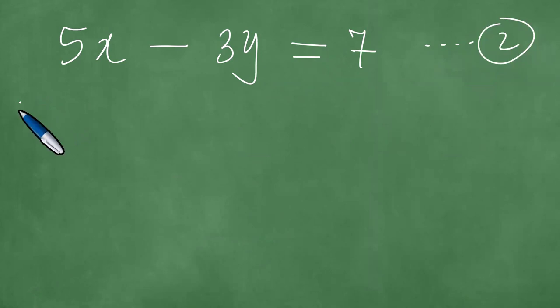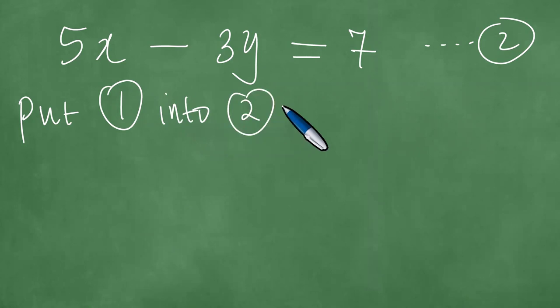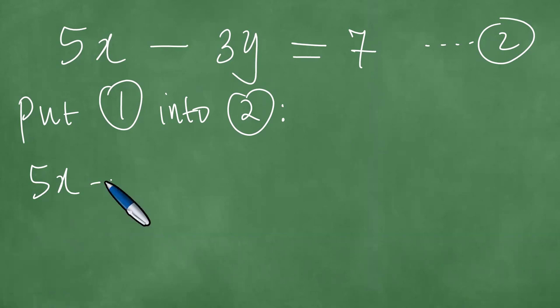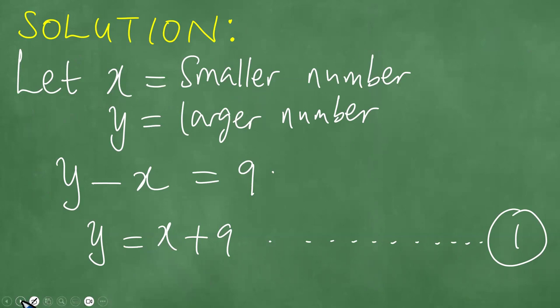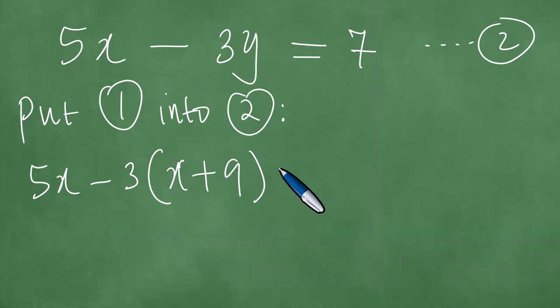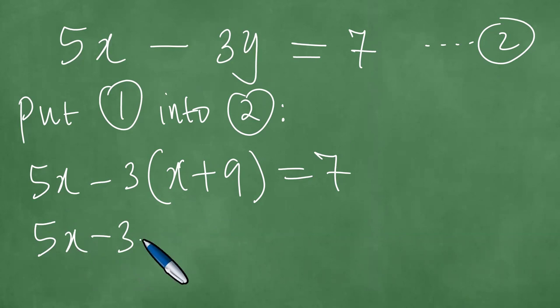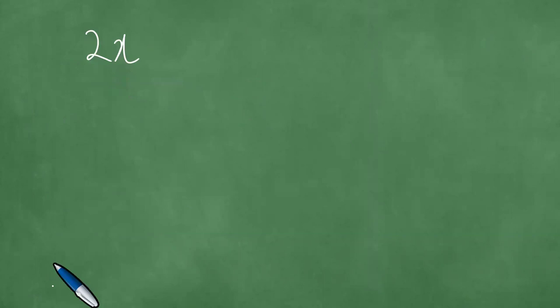We put equation one into equation two. So we substitute: five x minus three y, and the y is x plus nine, so we write five x minus three times (x plus nine), and this equals seven.